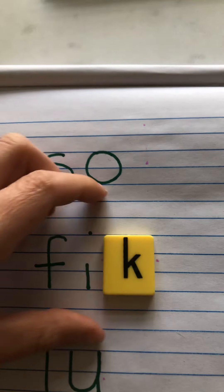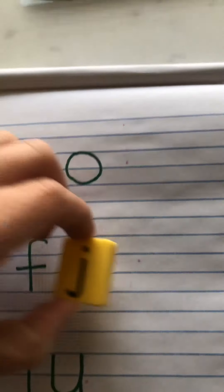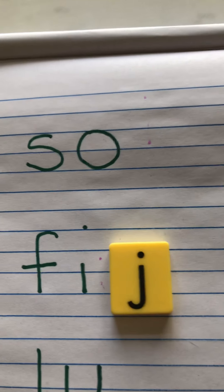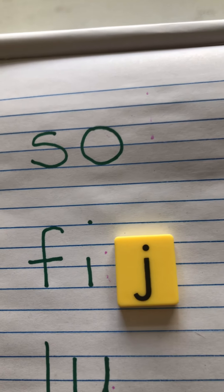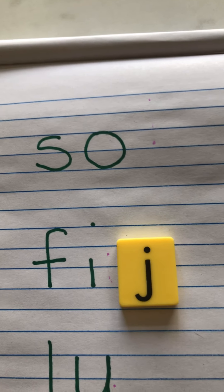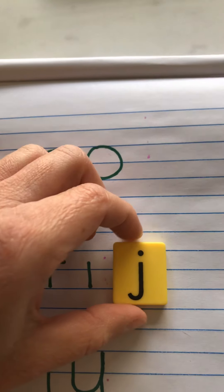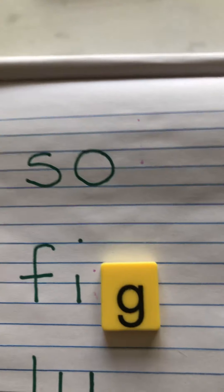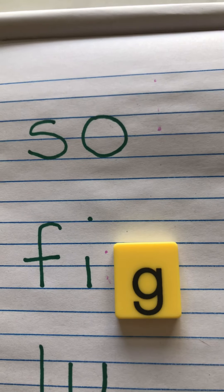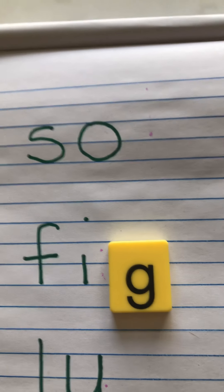Change the k to a j, and you get fidge. Change the j to a g, and you get fig.